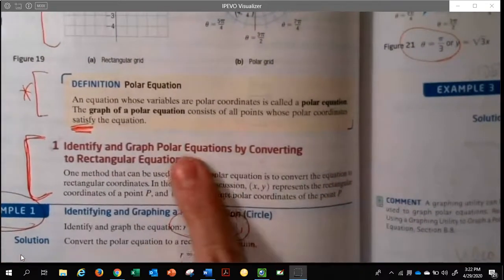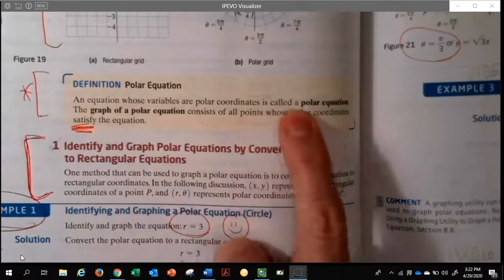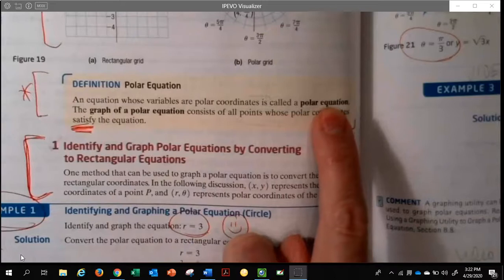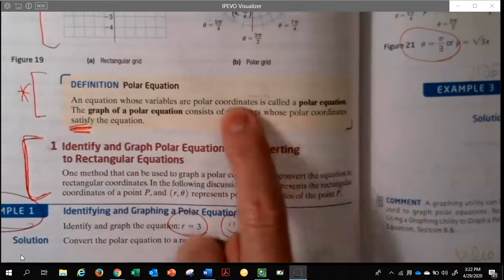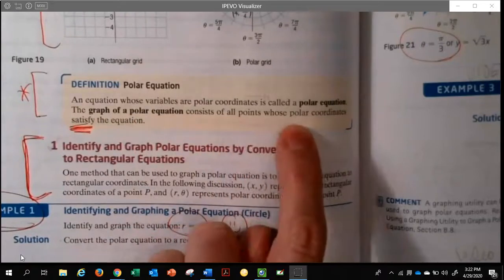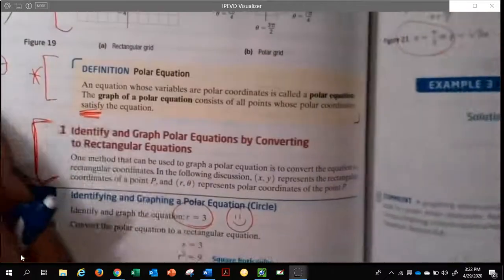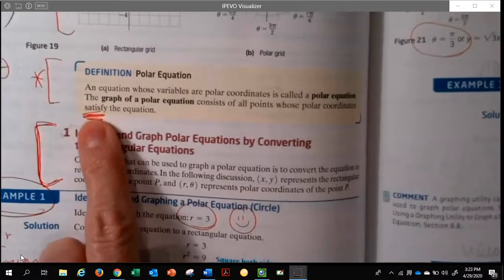The equation whose variables are polar is called a polar equation. Makes sense. It's going to have r's and thetas in it. Then the graph of a polar equation consists of all the points whose polar coordinates—what I just showed you—satisfy it. They make it true.